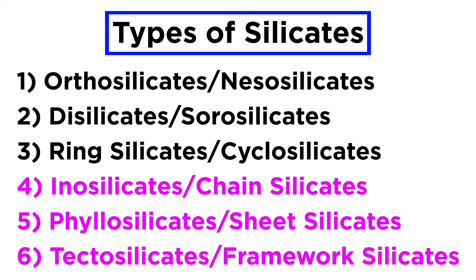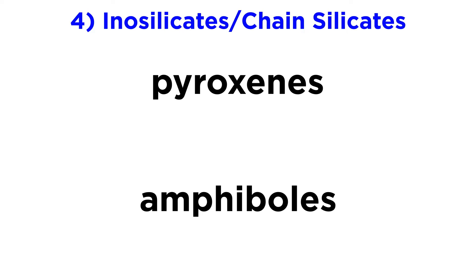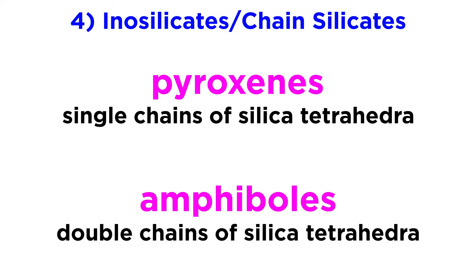There are three more subclasses to go over, so let's talk about these now. The next group of silicates, called chain silicates or inosilicates, are divided into two subgroups: pyroxenes, which have single chains of silica tetrahedra, and amphiboles, which have double chains.